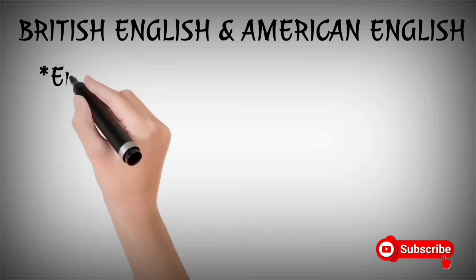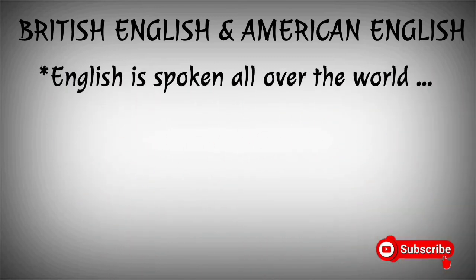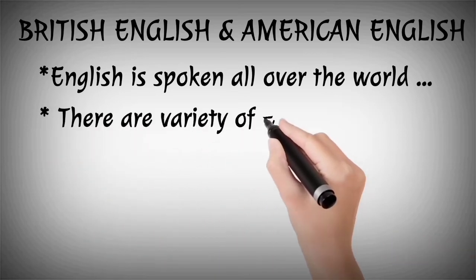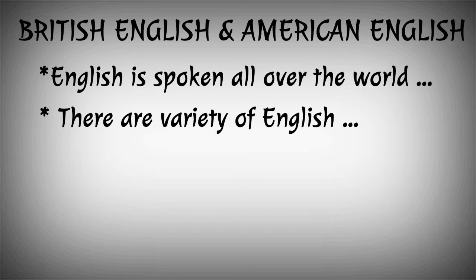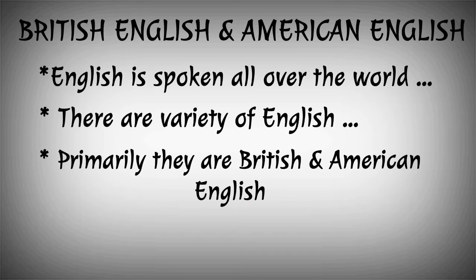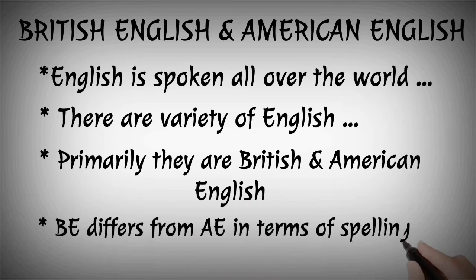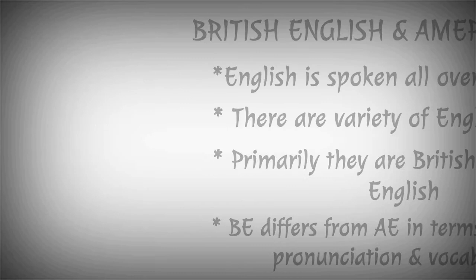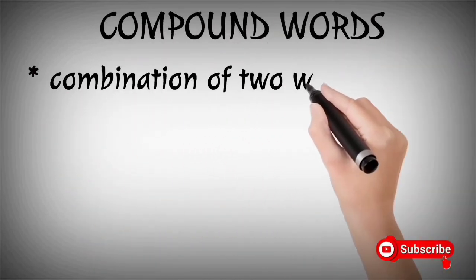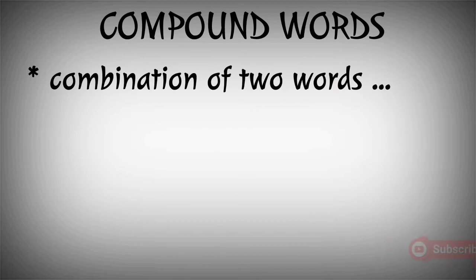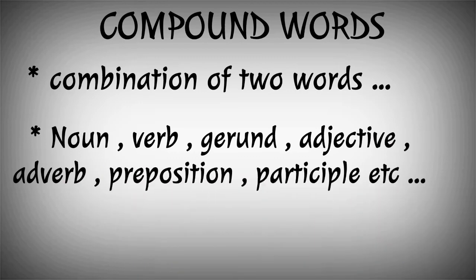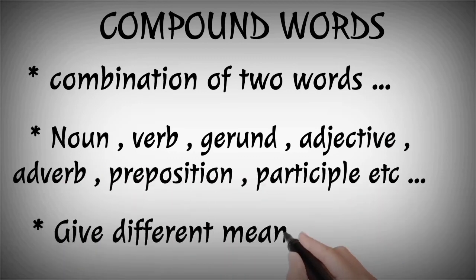There is also polysyllabic, which has four or more syllables. Next, British English and American English — English has a variety of forms. British English differs from American English in terms, vocabulary, and spelling. Compound words are a combination of two words — combinations of noun, verb, gerund, adjective, adverb, preposition, participle, etc., each giving a different meaning.